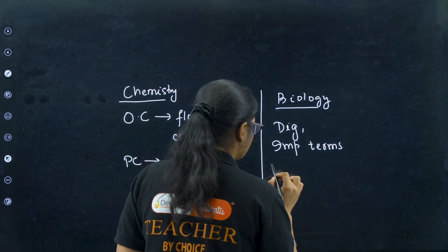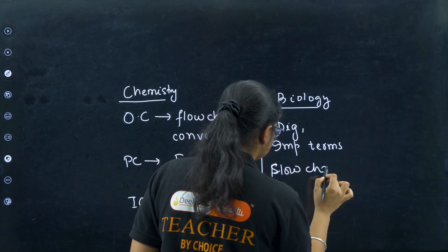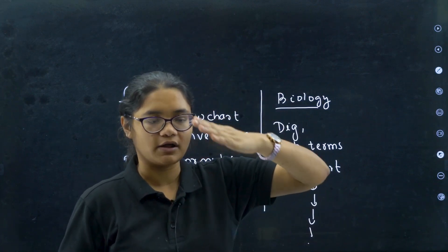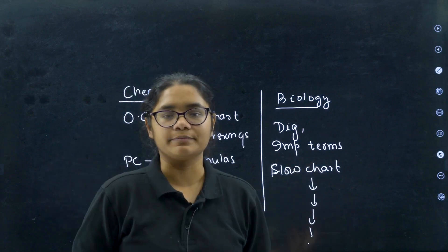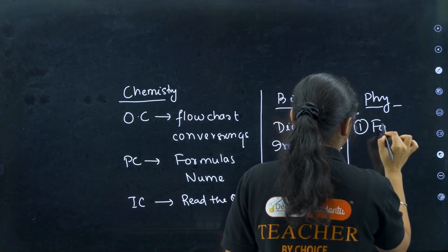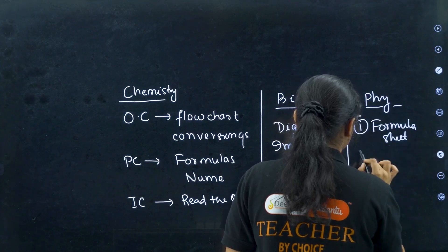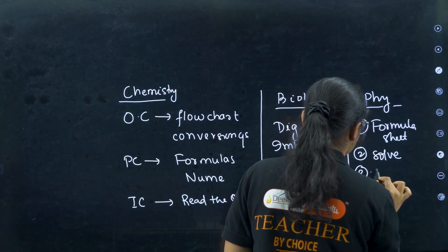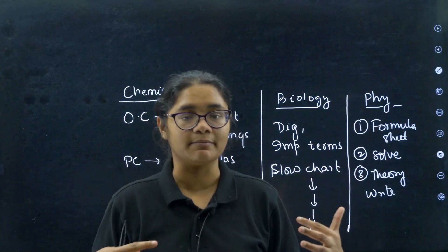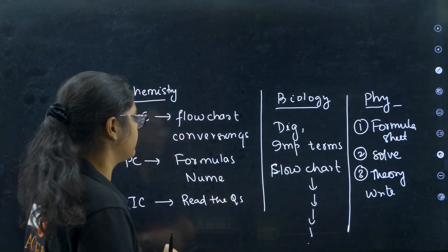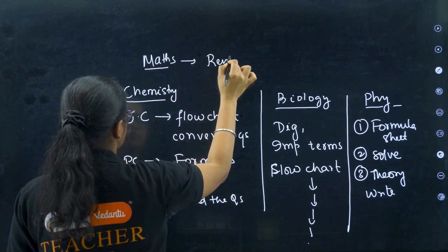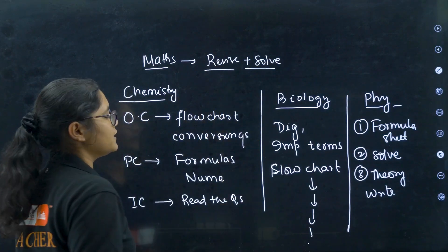For example, if you are studying the menstrual cycle, remember the phases in order — what comes after what. For physics, the best revision method is to make a formula sheet, then solve questions on that. For theory questions, try to write and practice them — you may think you remember everything, but writing them down really helps. For maths, there is a simple logic: just revise the formulas and solve questions. There is nothing else you need to do in maths.